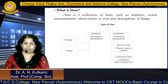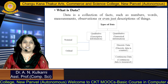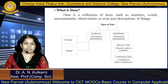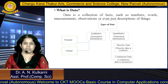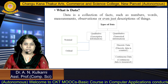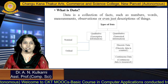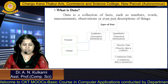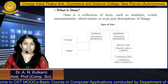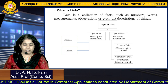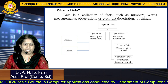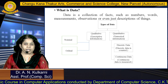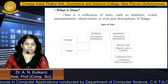Now, what is actually data? Data is nothing but a collection of facts such as numbers, words, measurements, observation, or even just the description of things. There are different categories of data: first qualitative and second one is quantitative.